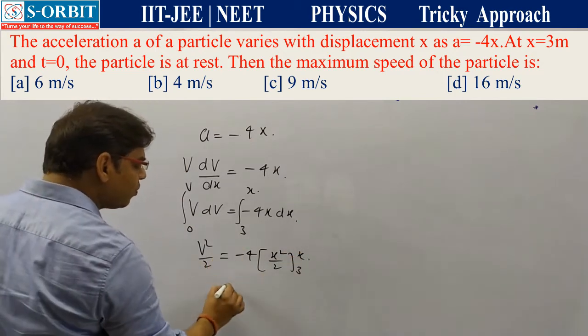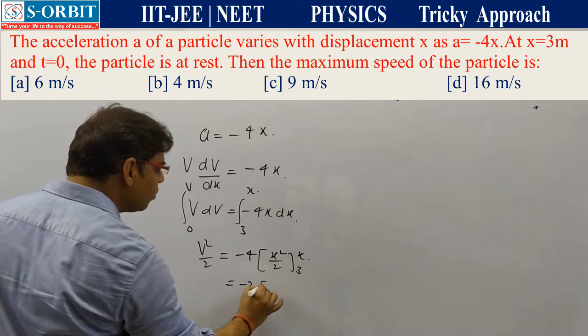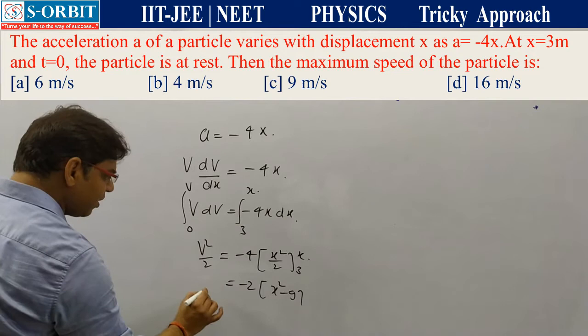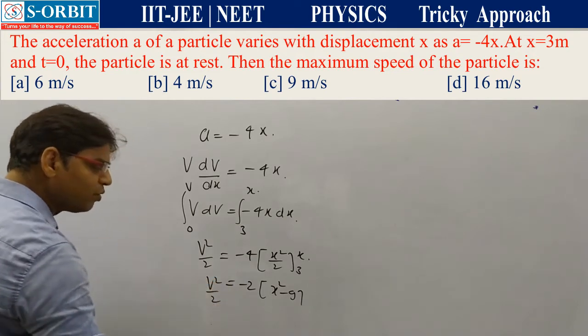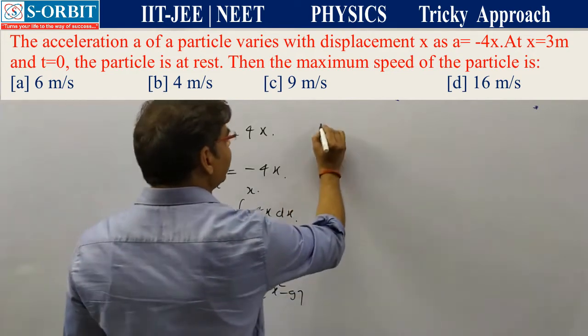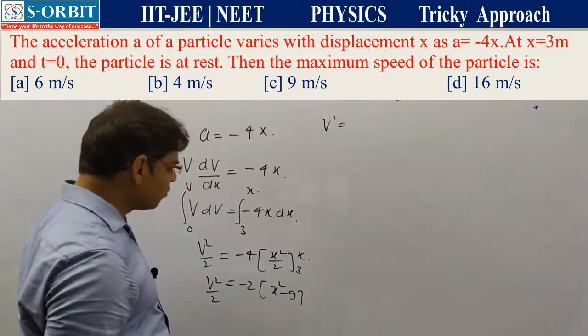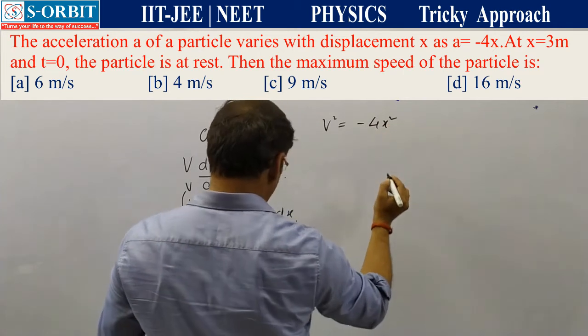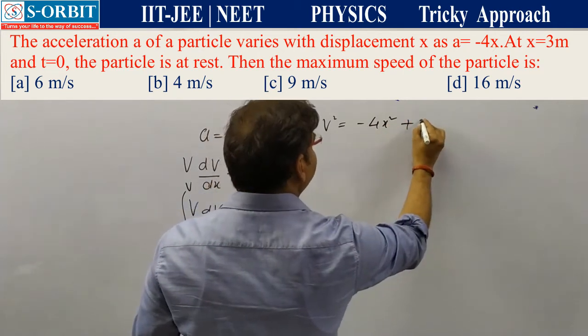This comes out to be -2(x² - 9). Therefore, v²/2 = -2(x² - 9), which gives v² = -4x² + 36.